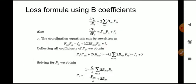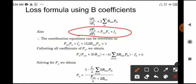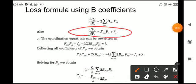So ∂PL/∂P1 equals sigma_M (B_MN · P_M). We also know that dFn/dPn is equal to F_NN · P_N plus f_N, an equation we have already learned in previous lectures. Therefore dFn/dPn equals F_NN into P_N plus small f_N.